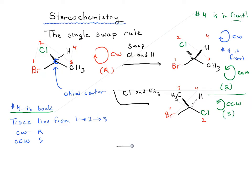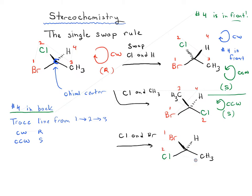Let's swap chlorine and bromine. That would give us chlorine in place of bromine, with CH3, H in the back, and bromine in the front. When we trace 1 to 2 to 3, we're again going counterclockwise. So this is S.